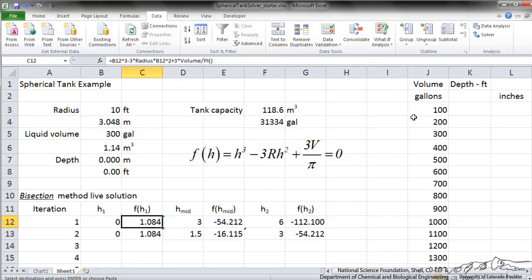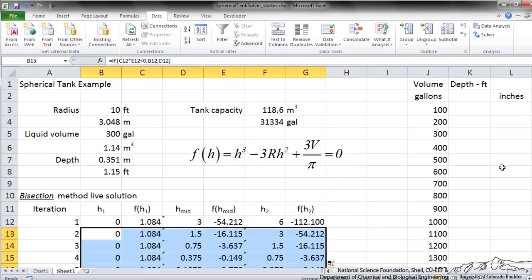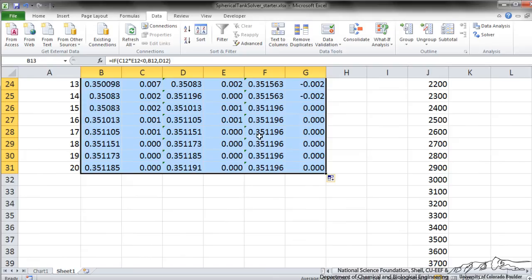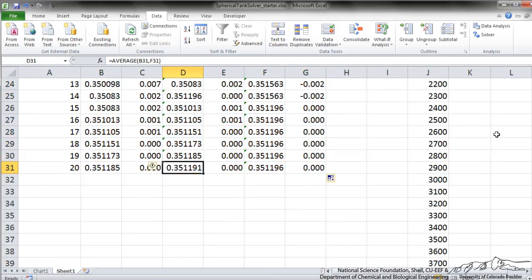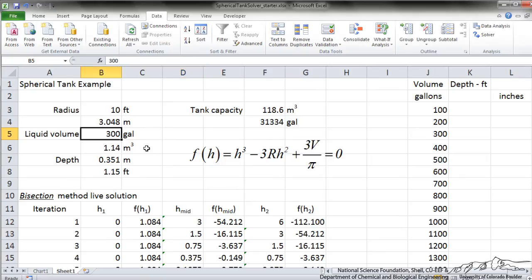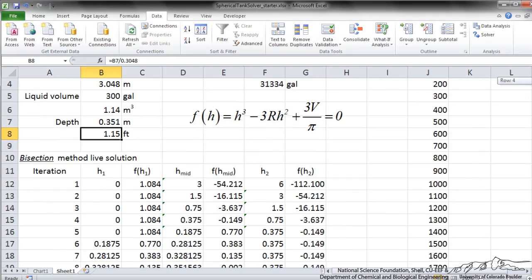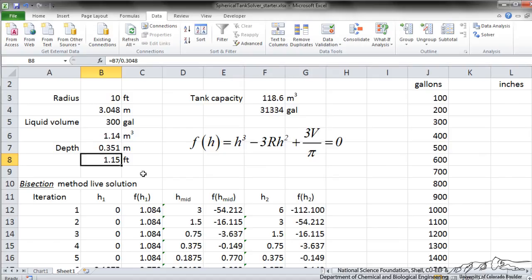I've got another spreadsheet here. I've set up the bisection method here. I have 20 iterations. I set up the first row starting with 0 to 6. I've set this up with the if statements in there for recalculating the lower and upper bounds. When I copy this down and after I do 20 iterations, it's going to converge on a depth for that particular volume. Right now, for the volume, I've got 300 gallons. Then I've set a pointer formula here for depth, which is going to take the very end of our 20 iterations. That's the zero of this equation solved using the bisection method. You'll see that it calculates a depth of 1.15 feet.